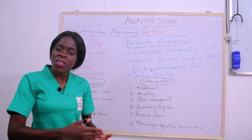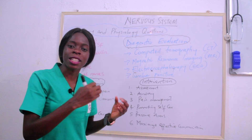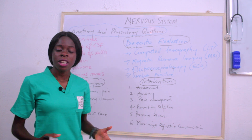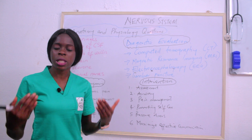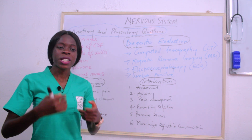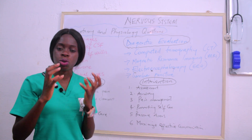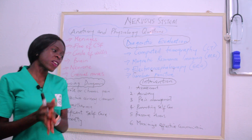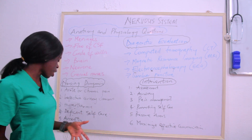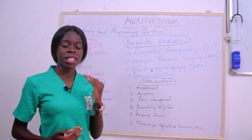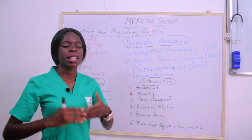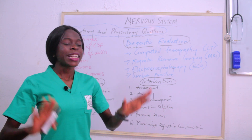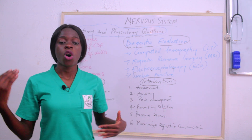Ineffective airway clearance is a key nursing diagnosis because when the brain is injured, we don't know the exact spot affected. It could be the respiratory center of the brain, which means there will be difficulty breathing. Ineffective airway clearance is very common in an unconscious patient, since the patient cannot clear secretions around the mouth and the airway becomes obstructed. Additional nursing diagnoses include hypothermia, deficient self-care, and anxiety.